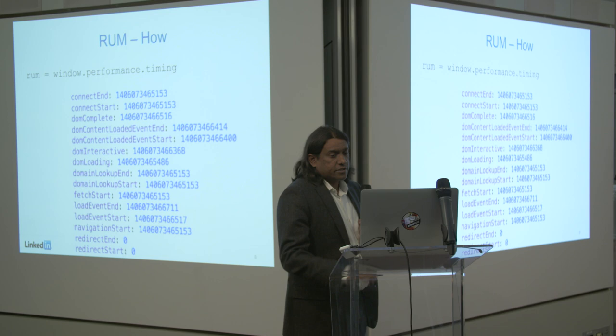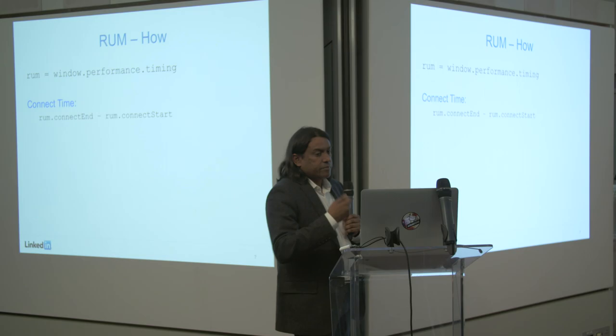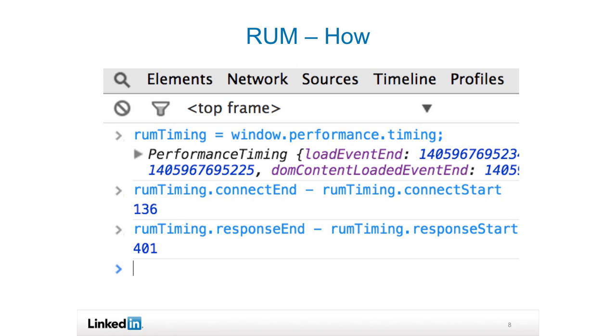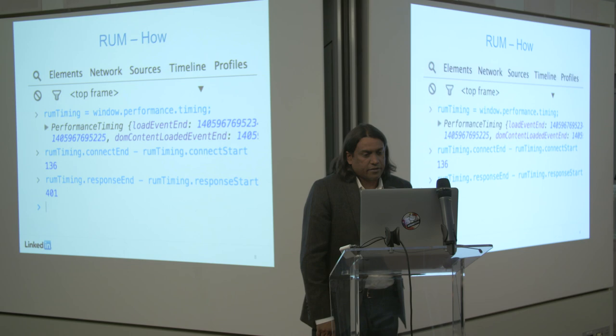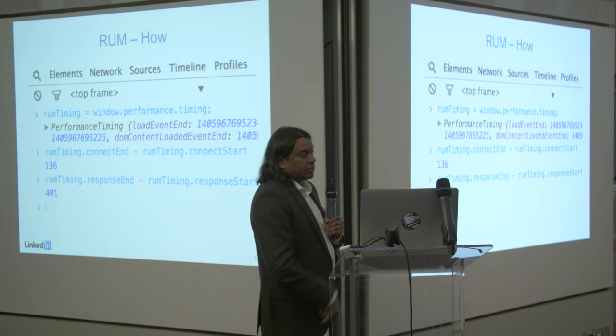You can do more interesting things. You can look at performance timing and say, hey, if I want to look at connect time, how can I do the math quickly? It's basically taking RAM.connectEnd and subtracting it from connectStart. You can look at download time, request to response time. You can calculate what is your connect time — in this example it's 136 milliseconds, and how long it took to actually download the content. Imagine doing it for hundreds of millions of users in real time and popping it into our telemetry infrastructure.